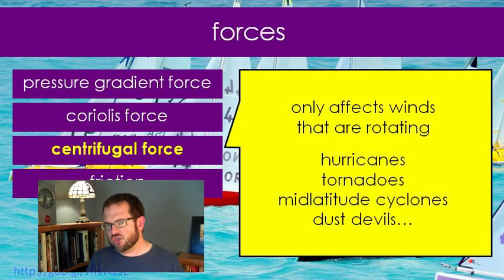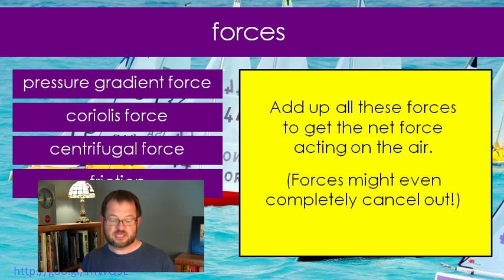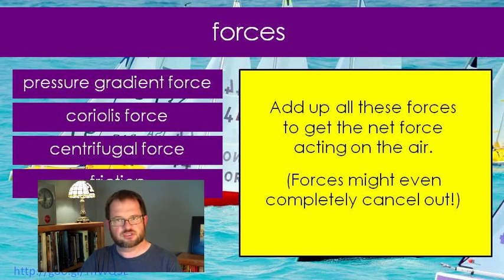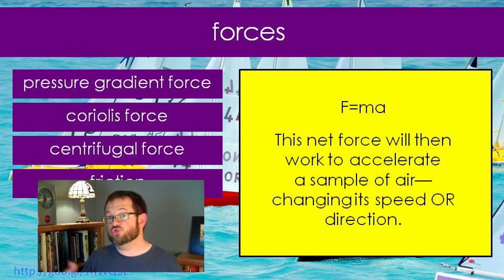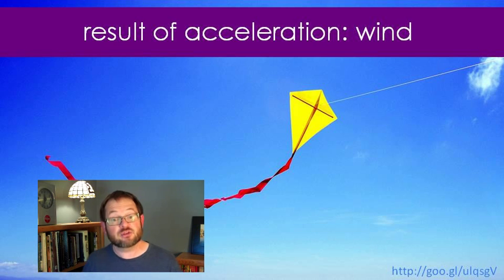Anytime you're trying to figure out how the winds are going to change, you have to do the math to figure out what all the forces acting on the air are at the present time, and then determine the net force — how those forces add up. They may even completely cancel out. If there's no net force, that doesn't mean the air won't move; it means it won't accelerate — an object in motion stays in motion. Or there might be some net force pushing the air in a new direction, accelerating it via F equals ma. Wind is the net result of the acceleration of air parcels.